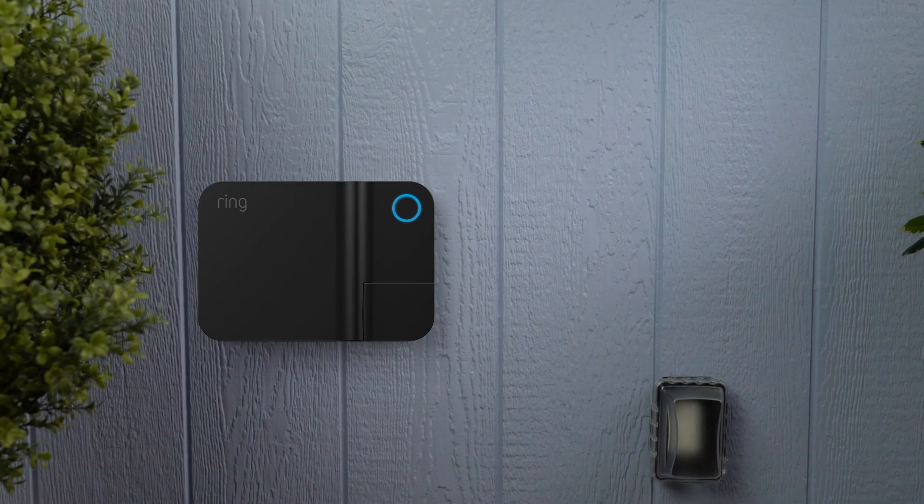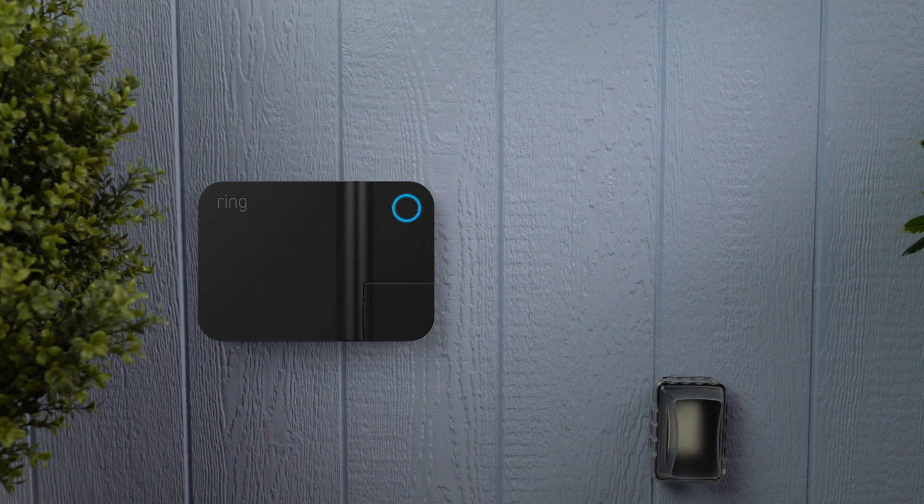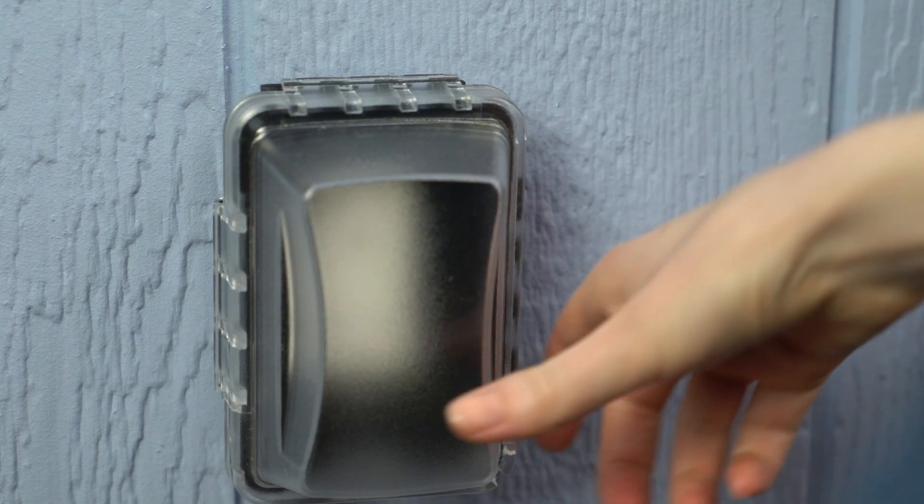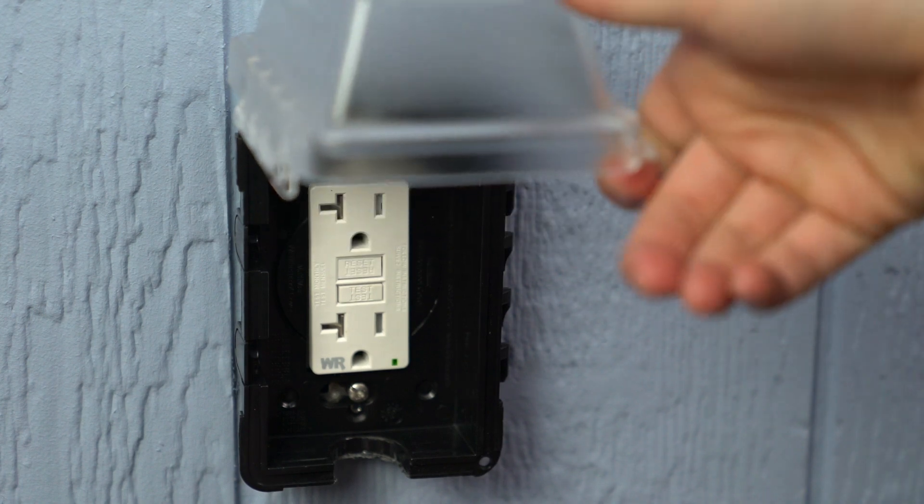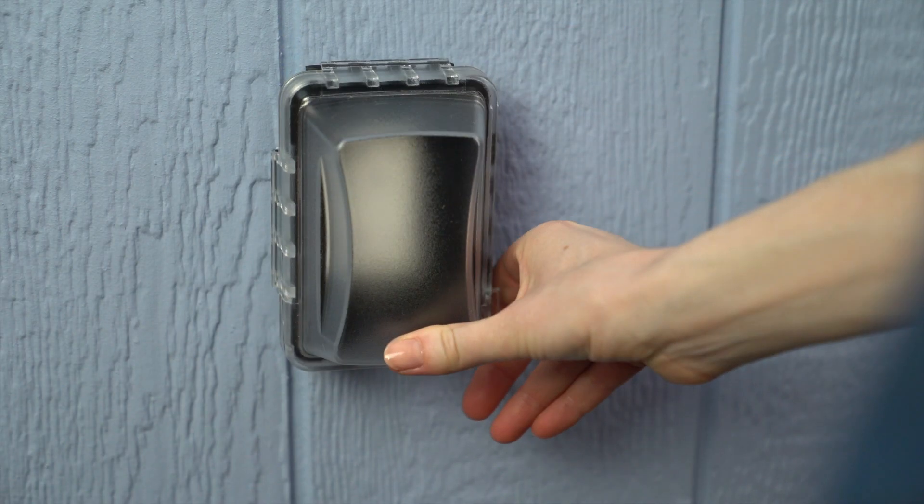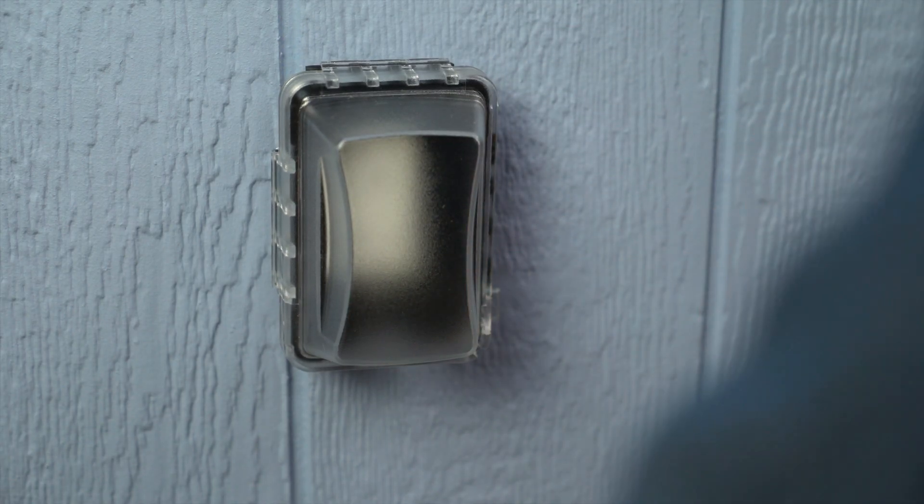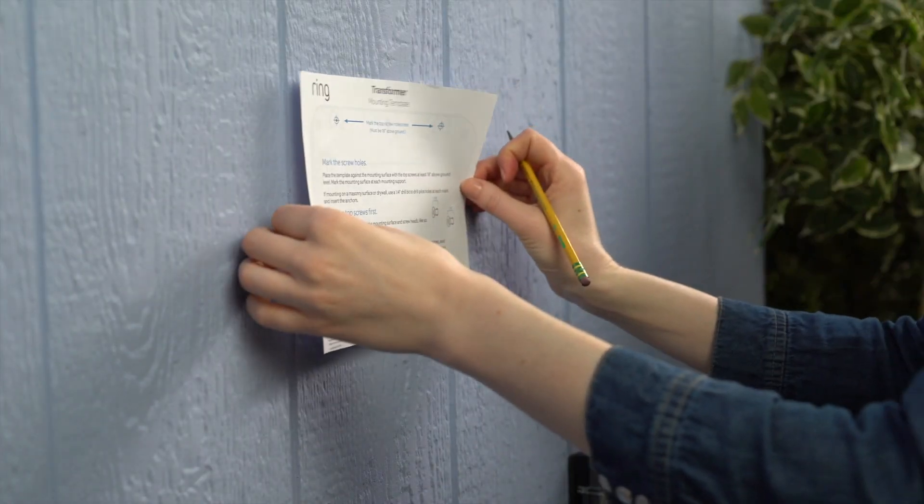You'll want to mount your transformer within a few feet of your power outlet. The outlet should be a covered, weatherproof model, protected by a Class A GFCI. You'll connect your transformer to power once you're done wiring, so leave it unplugged for now.